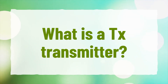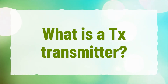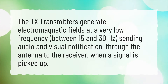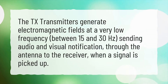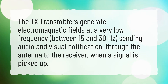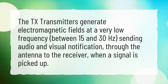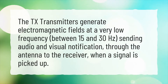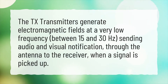What is a TX transmitter? The TX transmitters generate electromagnetic fields at a very low frequency, between 15 and 30 Hz, sending audio and visual notification through the antenna to the receiver when a signal is picked up.